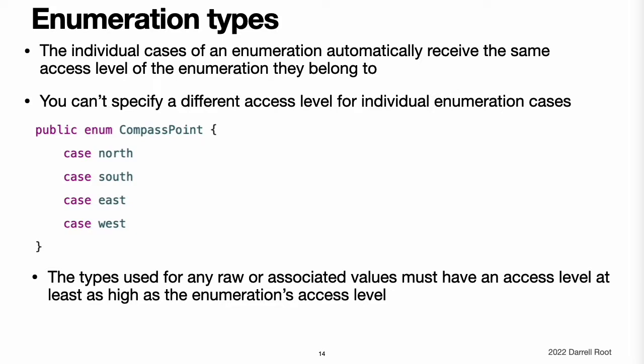Enumeration types. The individual cases of an enumeration automatically receive the same access level as the enumeration they belong to. You cannot specify a different access level for individual enumeration cases. In the example shown here, the compass point enumeration has an explicit access level of public. The enumeration cases north, south, east, and west therefore also have an access level of public. Raw values and associated values. The types used for any raw values or associated values in an enumeration definition must have an access level at least as high as the enumeration's access level. For example, you cannot use a private type as the raw value type of an enumeration with an internal access level.